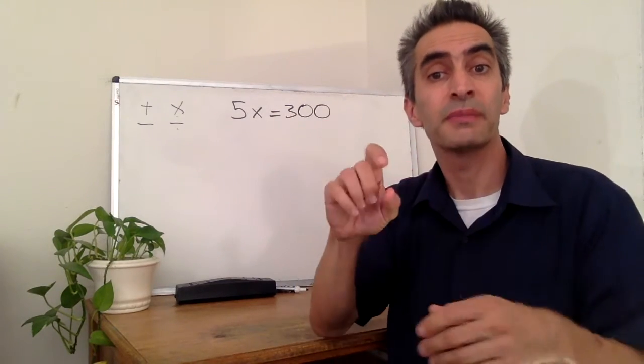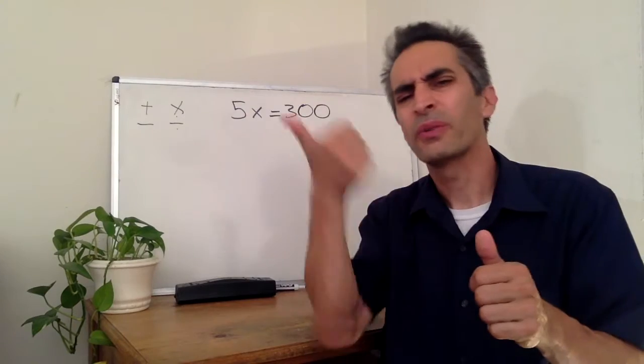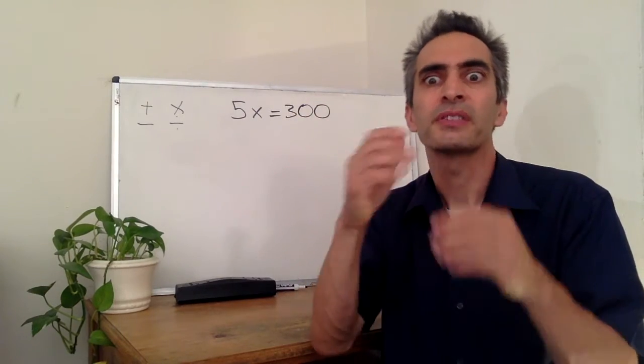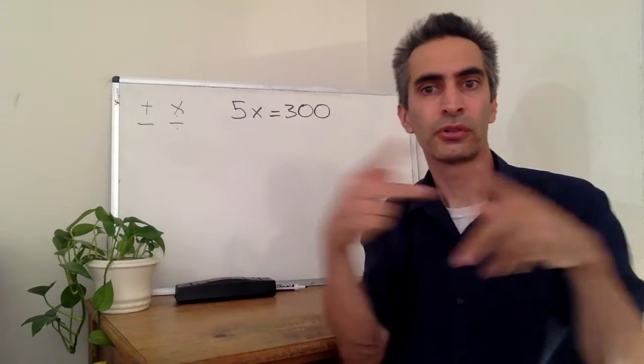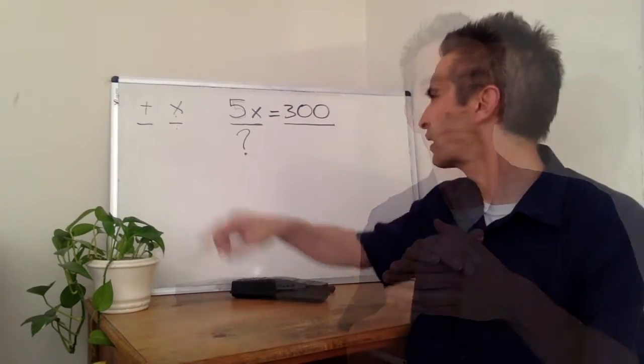5x means 5 times x. So how do we get rid of the 5? We've got to divide, because division is the opposite operation of multiplication.